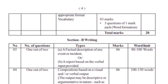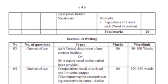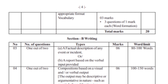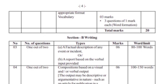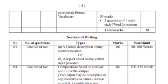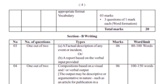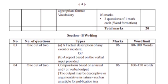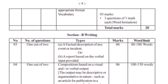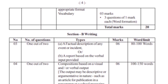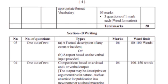Next is writing skills. Writing skills have a provision. One out of two options. Writing skills have two options. In the first part, you test the factual description of any event or incident. So what you have to do is write it in a factual description.